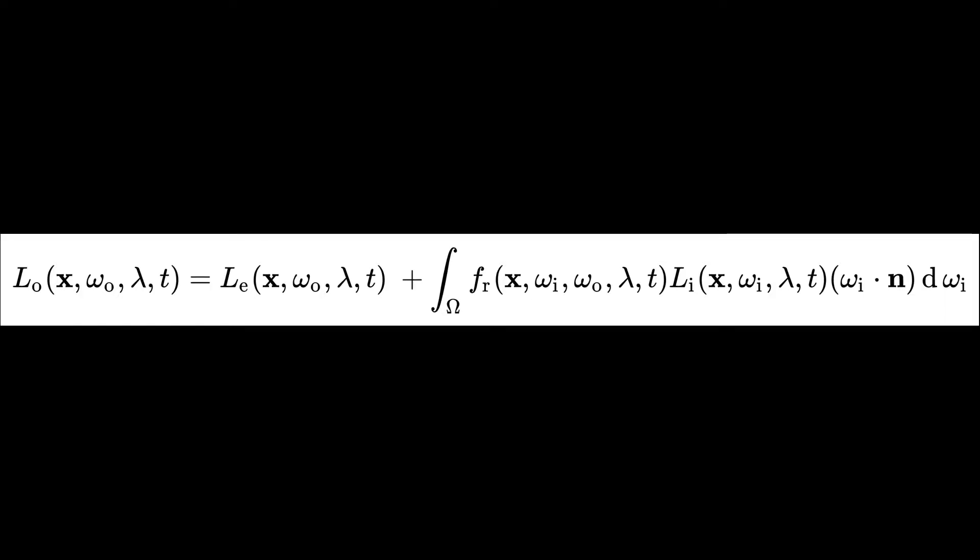L sub E is a light emitted from the surface. F sub R is a bidirectional reflectance distribution function, or BRDF, and L sub I is a light reflected by the surface. Omega, which is the region we iterate over, is a hemisphere centered around the surface normal. So the integral represents the total reflected light, and thus L sub O represents the total outgoing light from the surface.